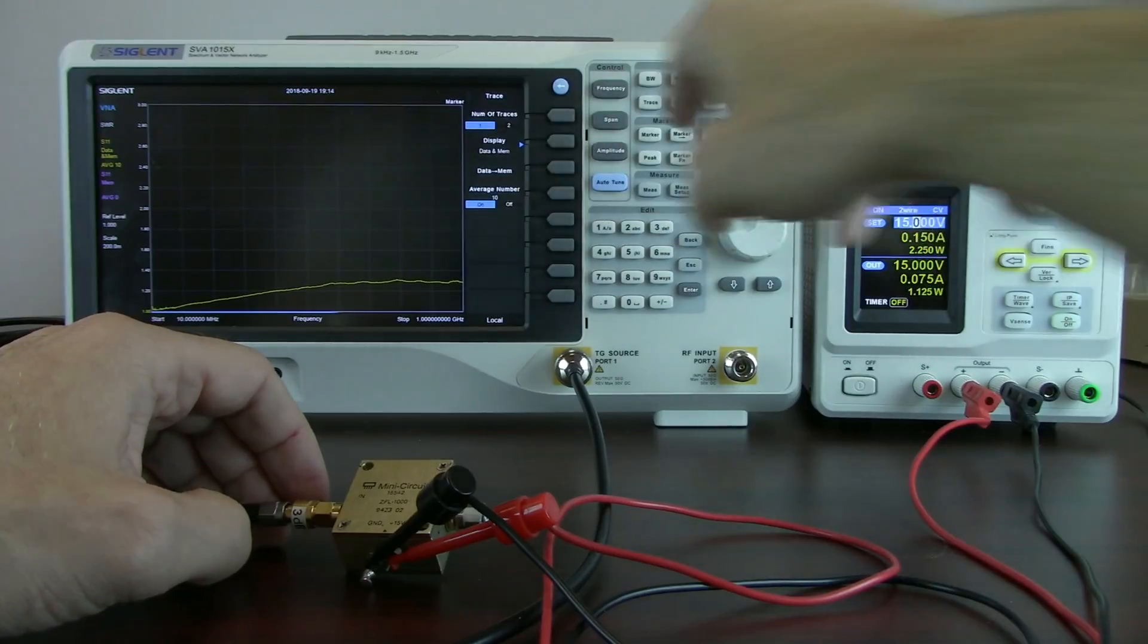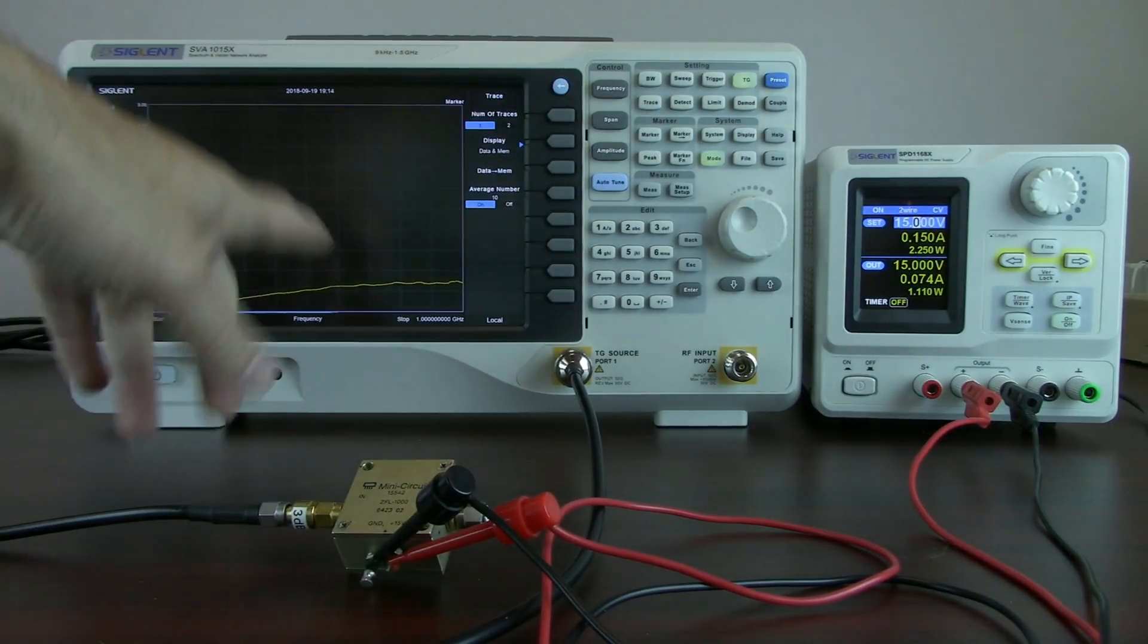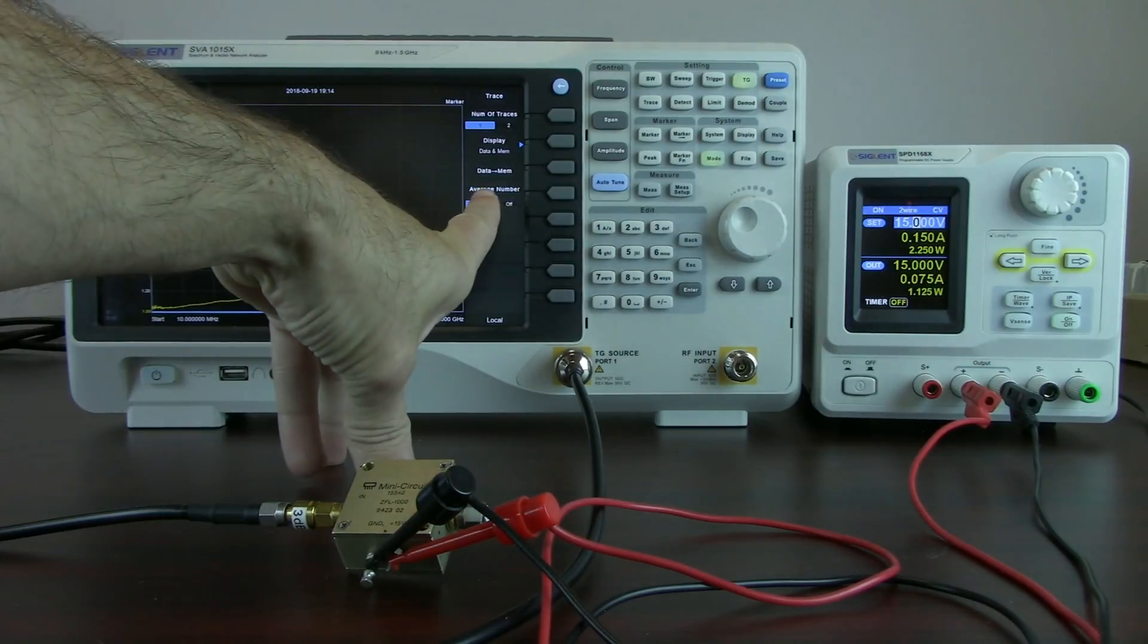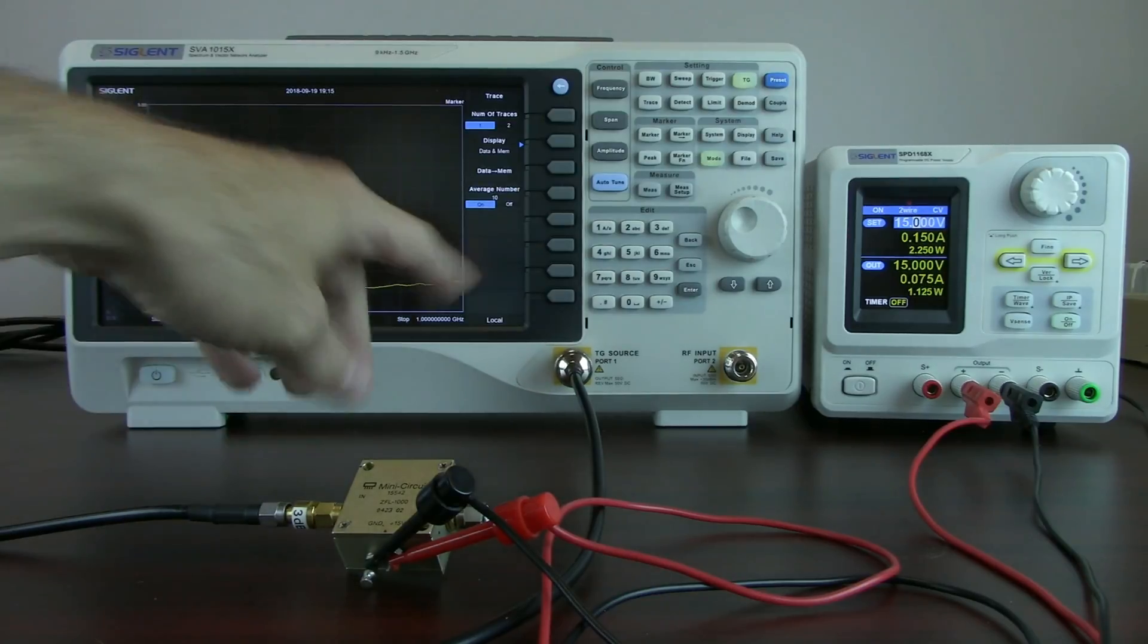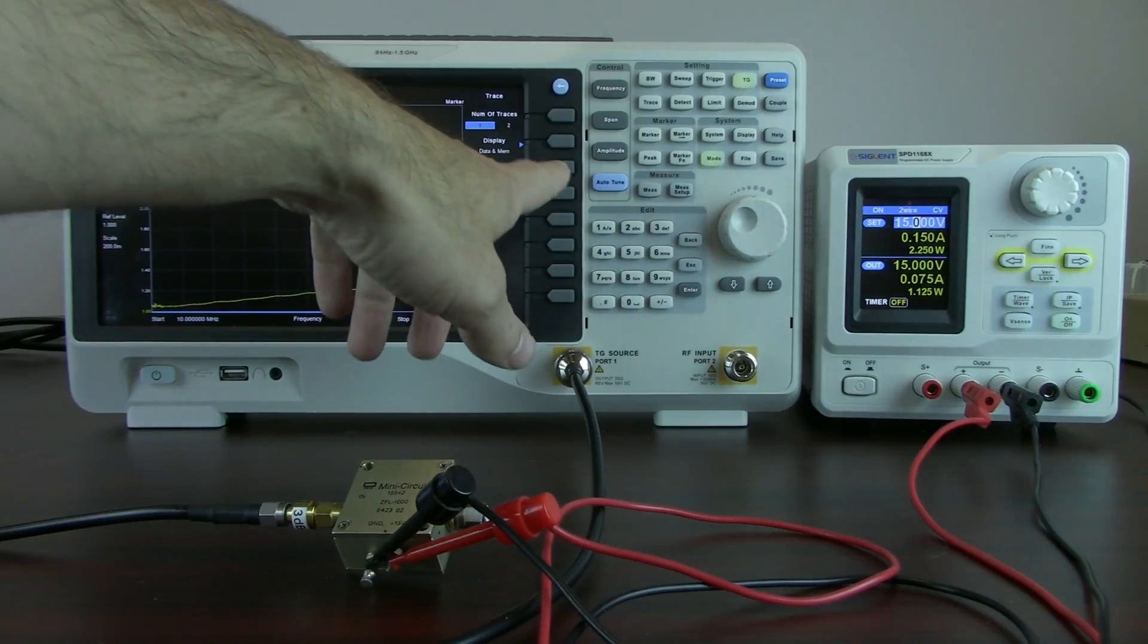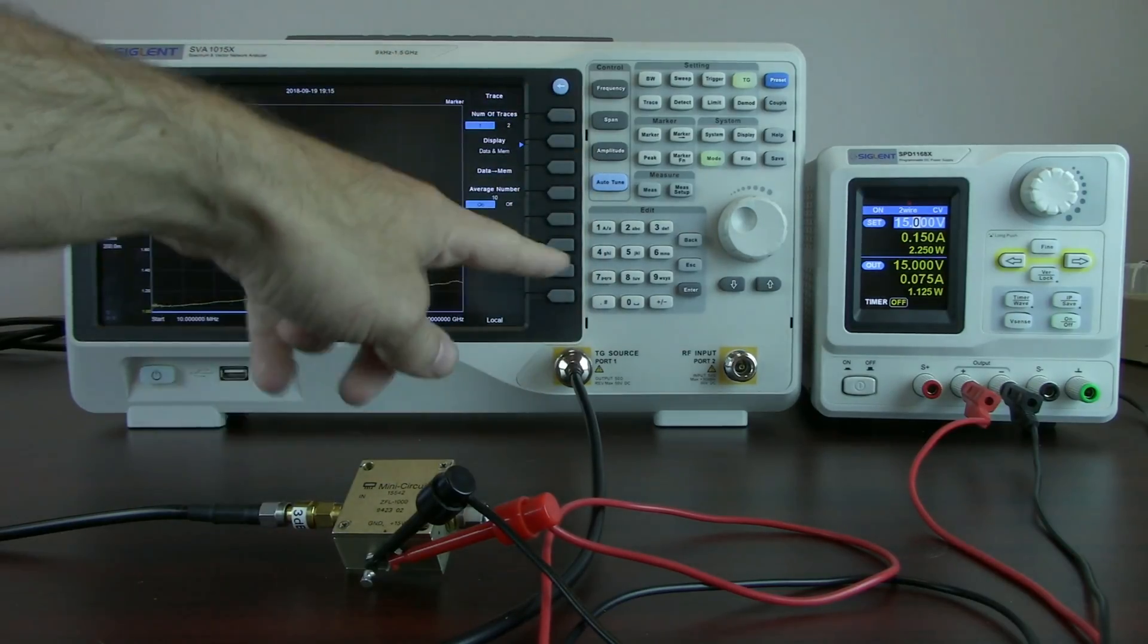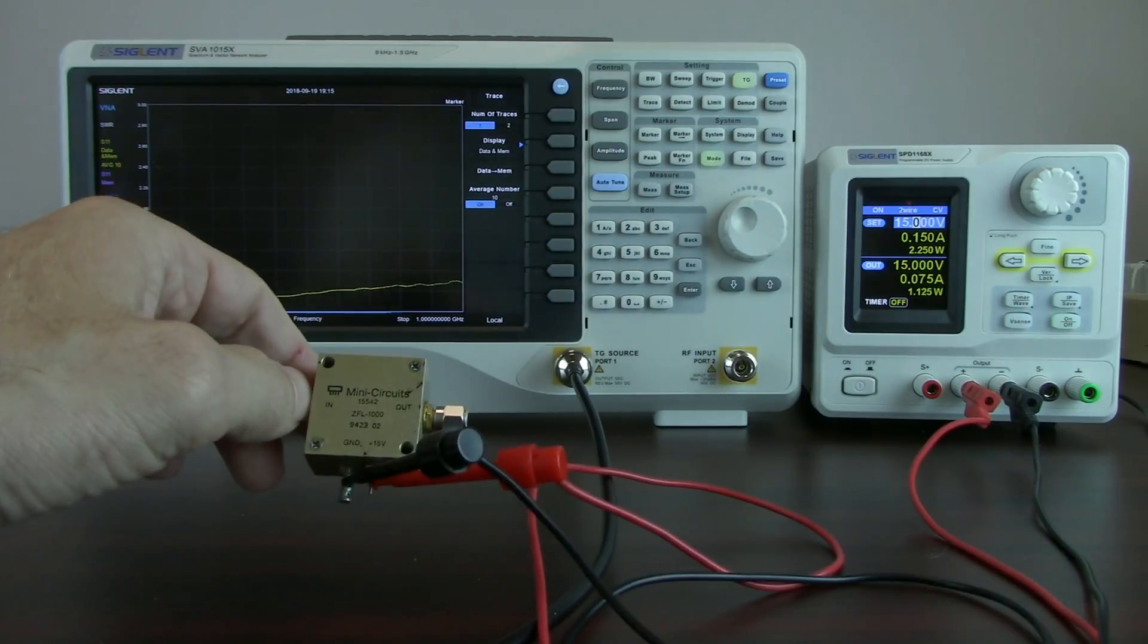So by selecting trace, I can now pull in different trace values and show different traces on the display. I set the average number to 10. And so you could see we've got a nice curve here that's very, very close to what we see on the data sheet. I can save that to memory. So I can go data memory. And that's going to freeze that particular input curve for the VSWR.